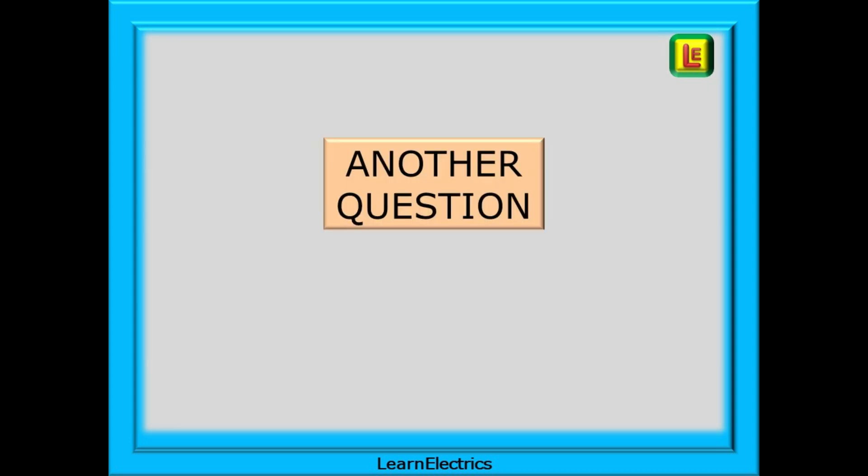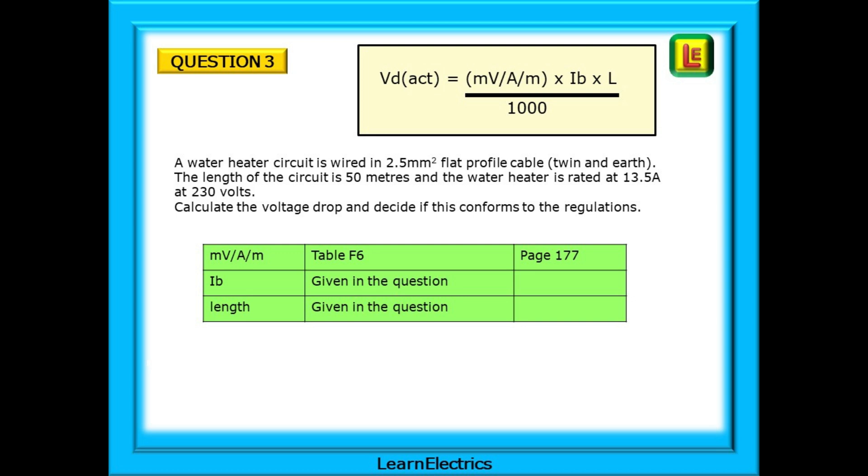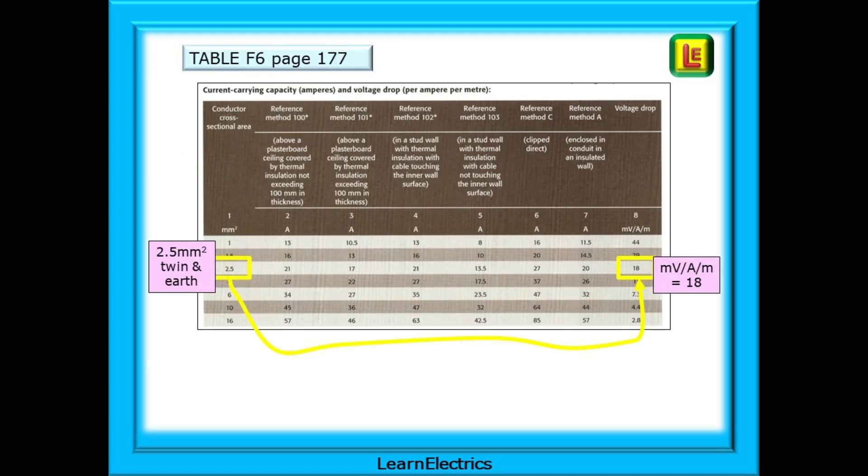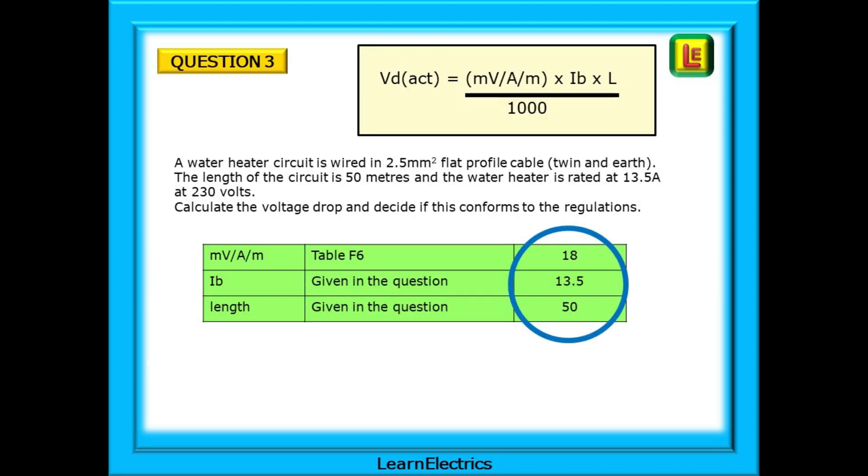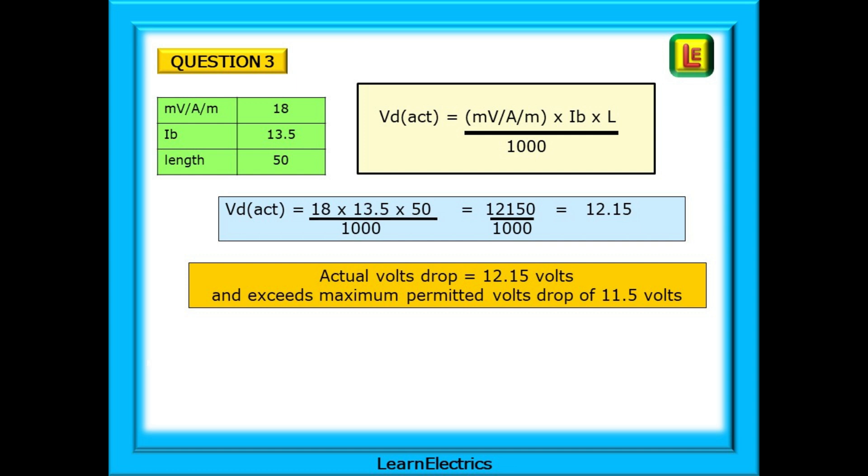Let's do another question. This time we have a water heater circuit that is wired in 2.5mm flat profile cable. The length of the circuit is 50 meters and the water heater is rated at 13.5 amps at 230 volts. We must calculate the voltage drop and decide if this conforms to the regulations. Off to page 177 again table F6 where we find the 2.5 twin-earth cable has an MVAM of 18. As before complete the list of what we need to know before making the calculation. Put the numbers into the calculator and we have an actual voltage drop of 12.15 volts clearly over the maximum voltage drop limit for this circuit.